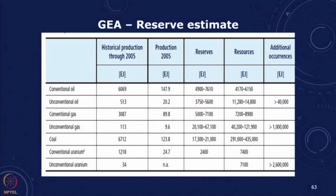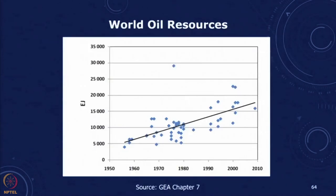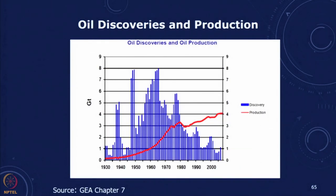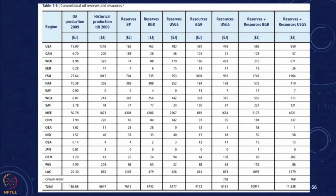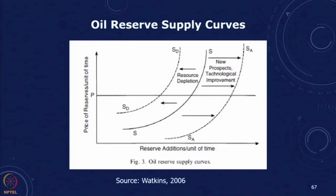Of course, carbon dioxide emissions make it problematic to use fossil fuels. Oil resources have shown an increase over time if plotted. An interesting image shows that oil discoveries have been declining while production is increasing. Details for different regions — production, reserves — can be found in the global energy assessment resources chapter.